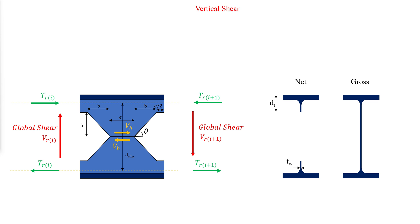The available vertical shear strength must be calculated at the net section as well as the gross section. In both cases, AISC specification section G2 should be used. At the net section, the shear force should be proportioned between the top and bottom Ts based on the areas of the Ts relative to each other. For the gross section, H over tw should be calculated using the clear distance between flanges minus the fillet, and DT used for the net section. KV should be taken as 5.34 for the gross section and 1.2 for the stem of the T shape at the net section.